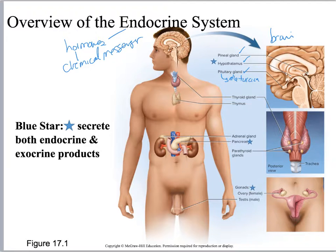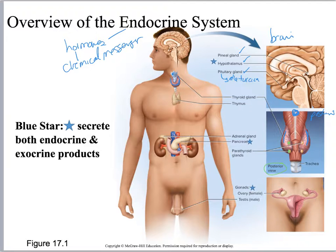Touch the front of your throat. If you're male you should feel the tip of your Adam's apple, which is your thyroid cartilage. Right below that is the thyroid gland. This is a posterior view, and you can also see the little buttons here which are your parathyroid glands — a completely different gland on the posterior side.